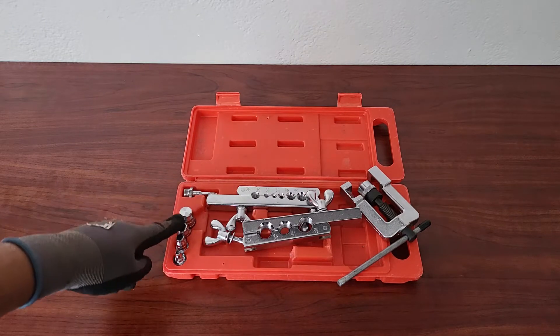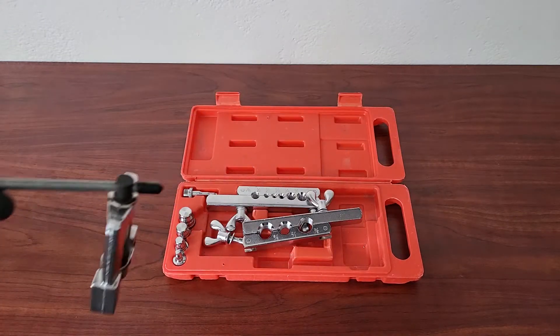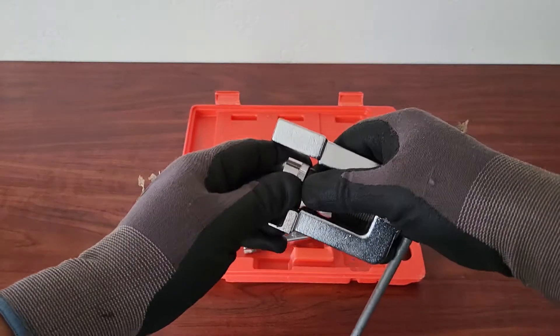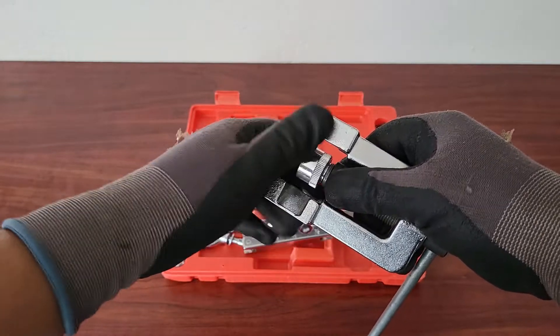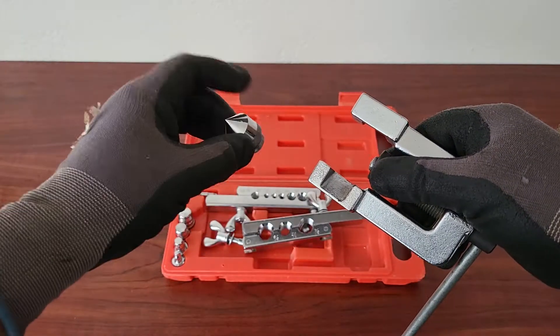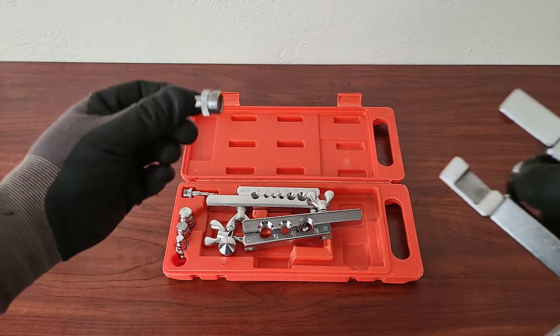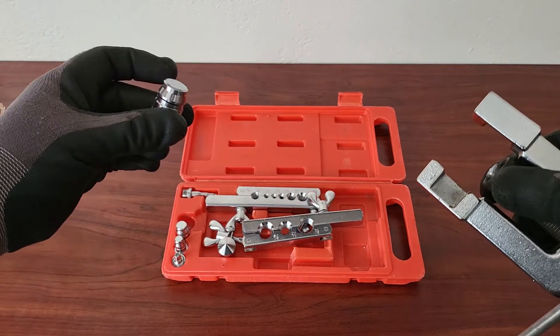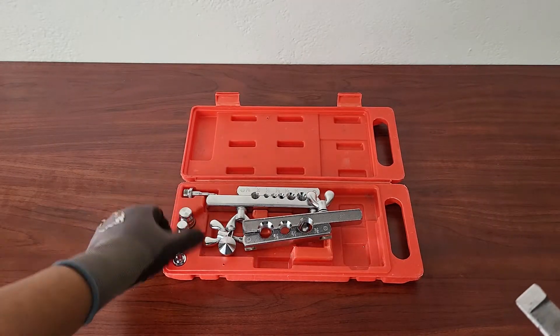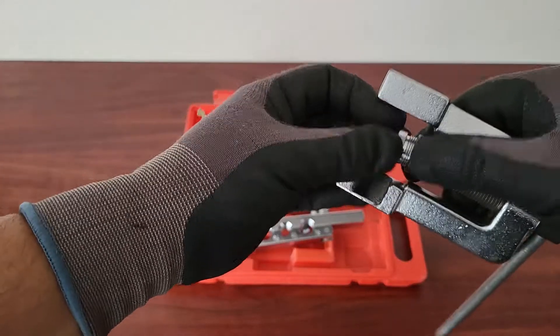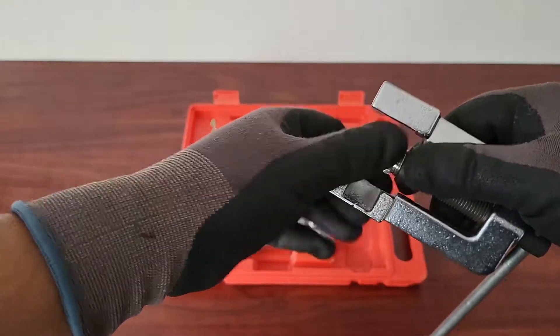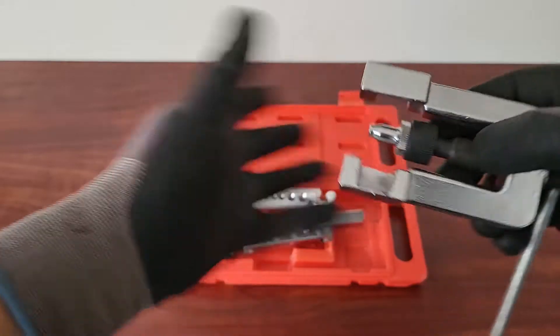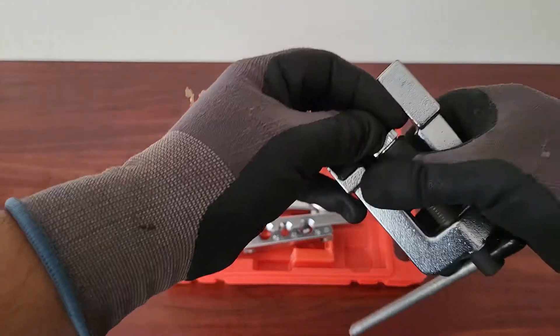Over here you have your actual flaring and swaging tool. This is the actual tool that clips onto the block, and then this point here is what you're going to use to actually do the flare. Then over here we have the different sizes of fittings. These all fit on here, so this screws off, and then you screw whatever particular size you want. These basically just screw on, they are interchangeable, and that's why this tool actually fits all the sizes. Sort of a universal tool.